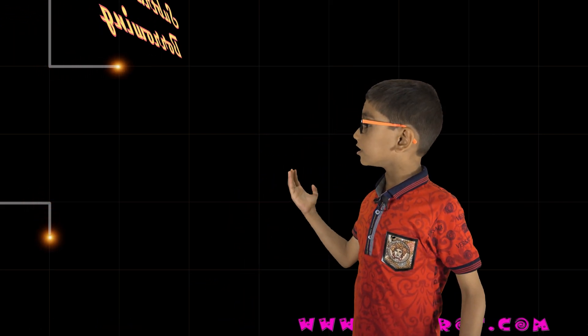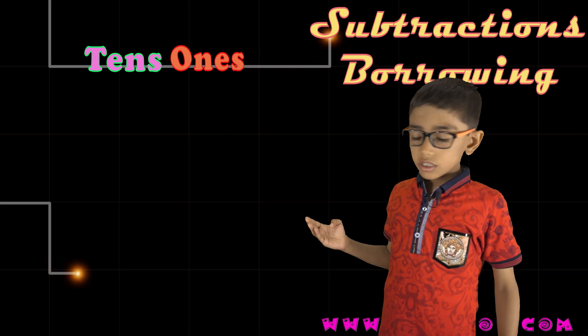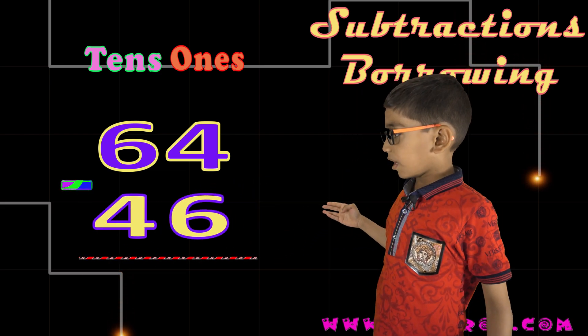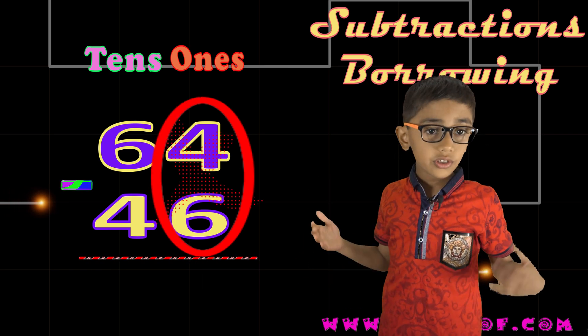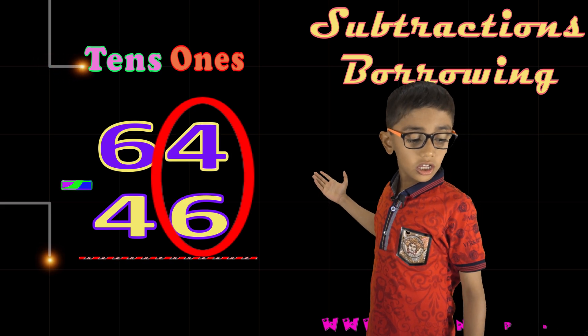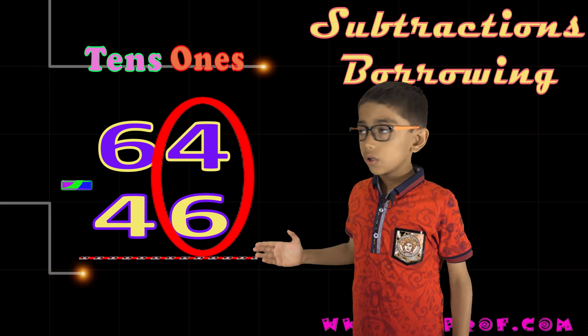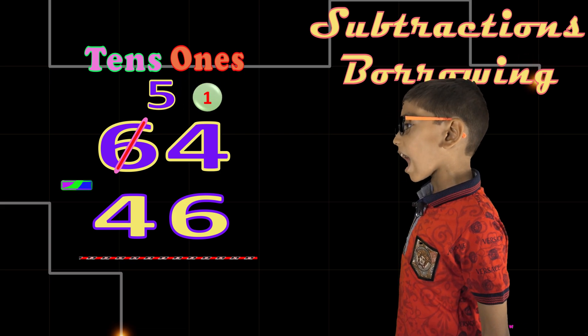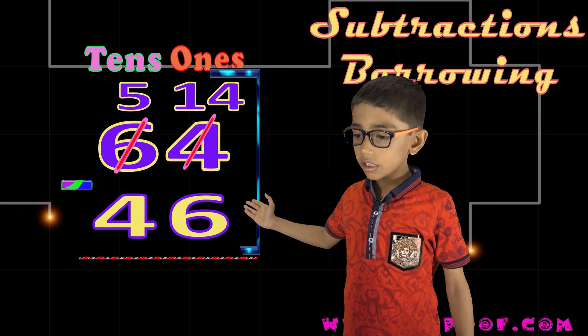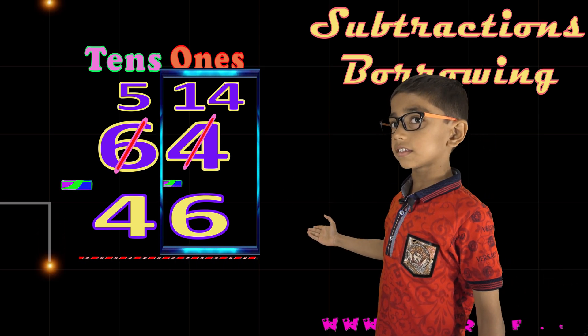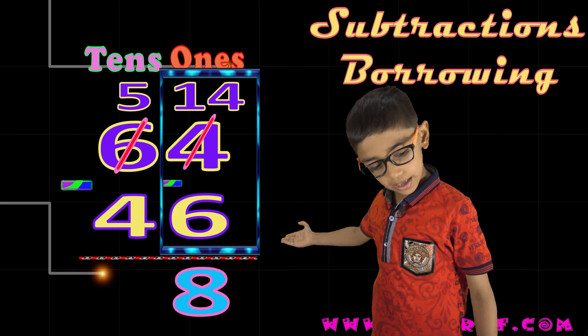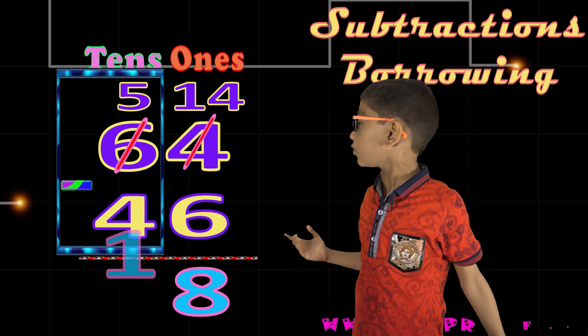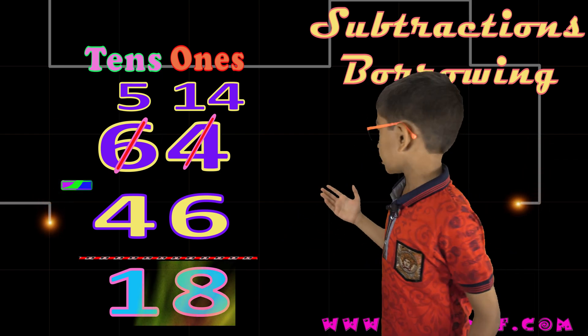Now we will do subtraction with borrowing. 64 minus 46. 4 minus 6. We can't do it because the top is the smaller number. So 4 will take 1 from the tens place. The 6 becomes 5, and 4 becomes 14. 14 minus 6. 14 minus 6 is equal to 8, so here comes 8. And in the tens place, 5 minus 4. 5 minus 4 is equal to 1. So here is 1. The answer is 18.